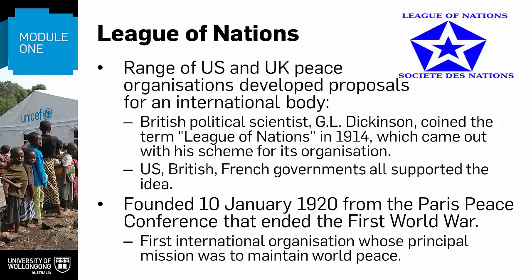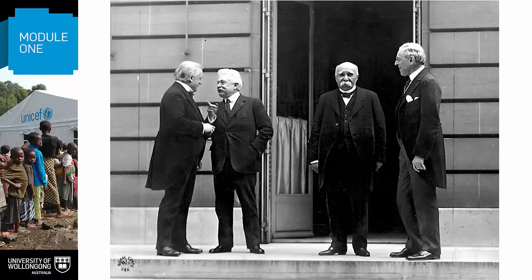The idea for a League of Nations emerged from the process and ideas described above, but more specific proposals started emerging from peace organisations in the US and UK in the late 19th and early 20th centuries. A British political scientist by the name of Goldsworthy Lowes Dickinson is given credit for coining the term League of Nations in 1914, which came out with his scheme for its organisation. The British, French, US and USSR also came to support the idea, though historians agree that US President Woodrow Wilson's support was a crucial factor in its establishment. The League was founded on the 10th of January 1920 from the Paris Peace Conference that ended the First World War. It was the first international organisation whose principal mission was to maintain world peace.